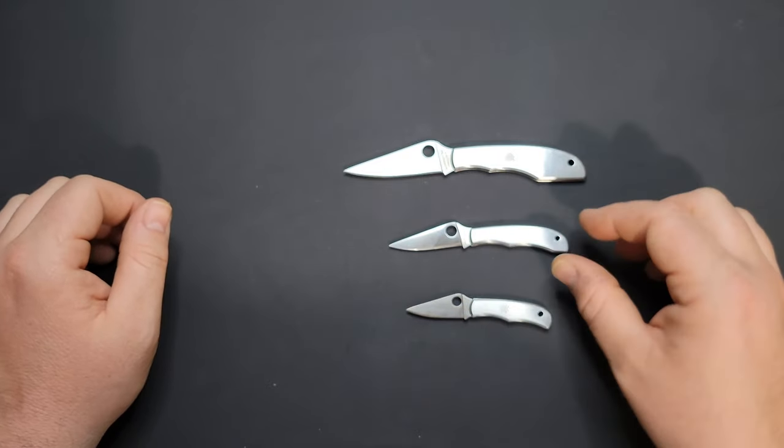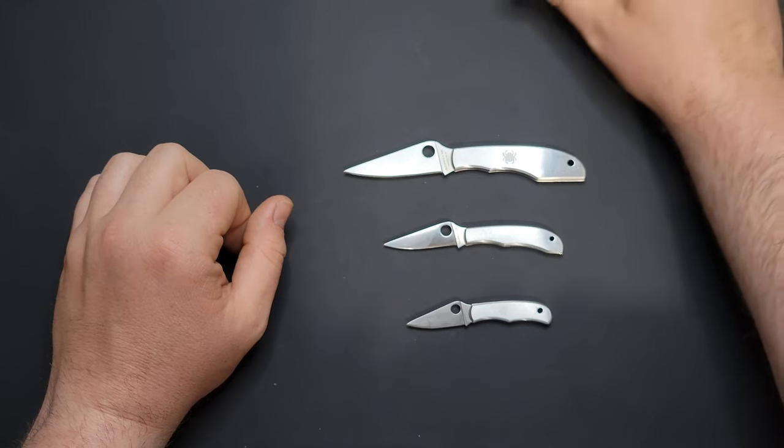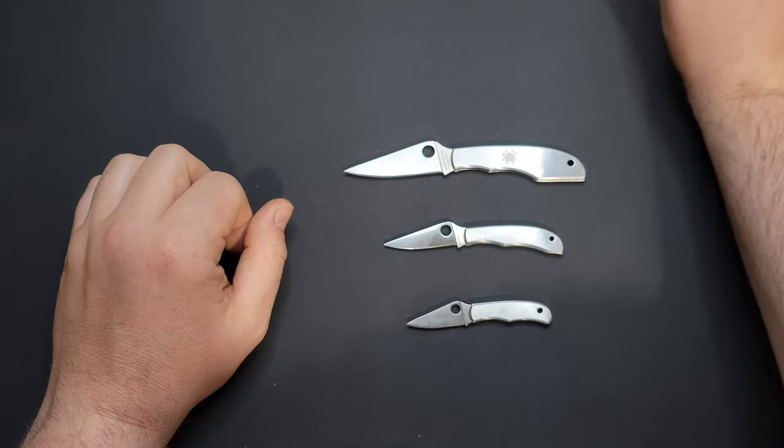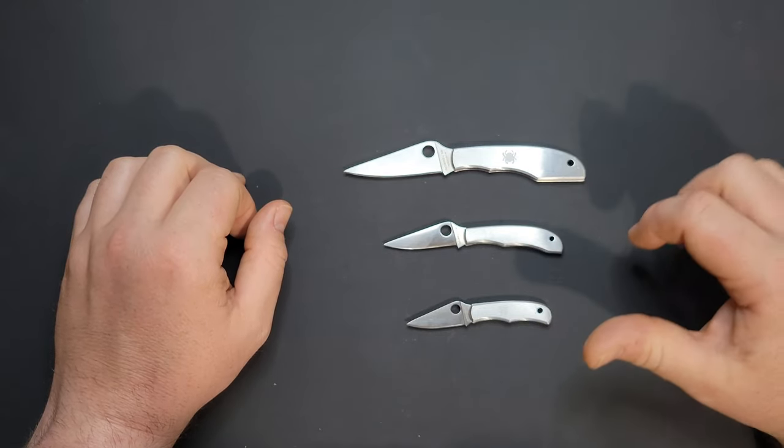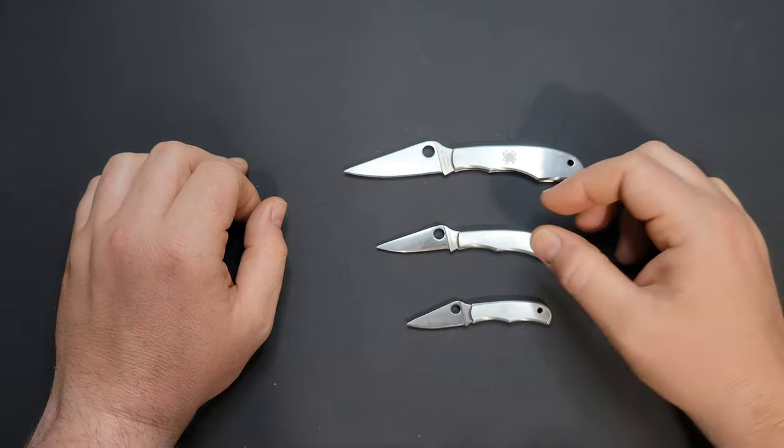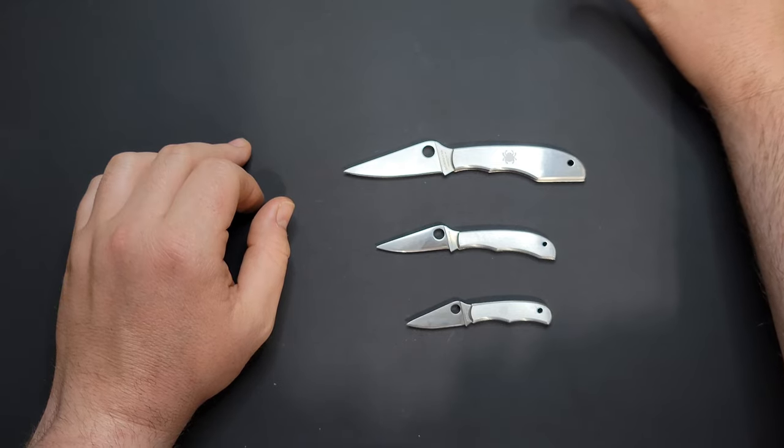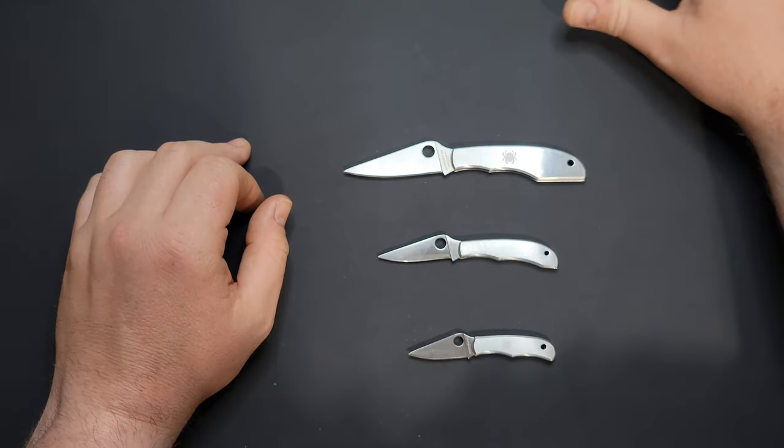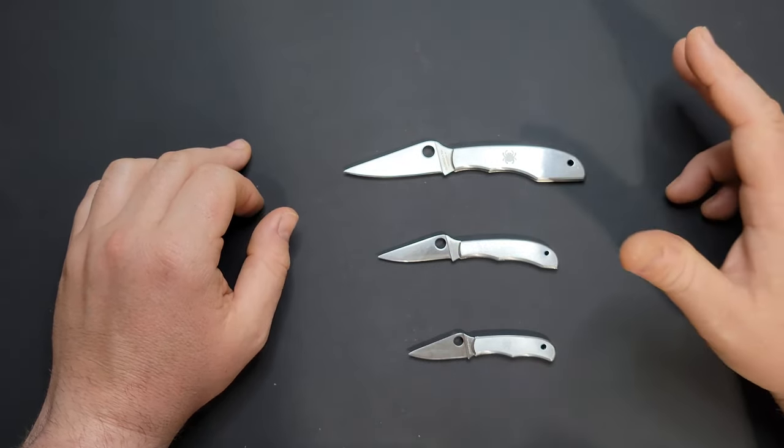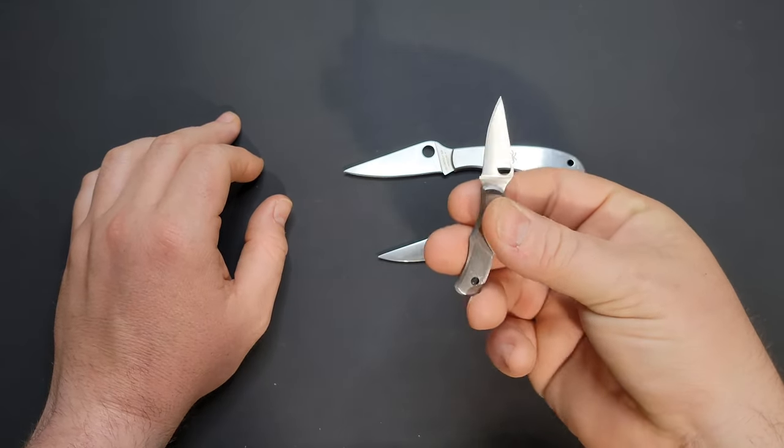Overall, if you're looking for a keychain knife, the price of these - the Grasshopper runs right around 29.25. The Honeybee, you're looking at 26.25 right now on Blade HQ. And on the Bug, the smallest of the small, there's a sale right now - our price anyway on Blade HQ, 22.50. Good little keychain knife for 22.50. I'm going to have them all linked down below in the description.